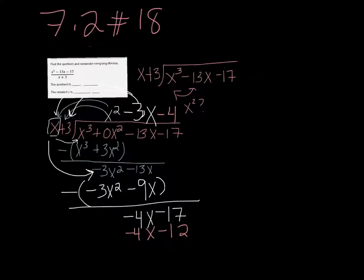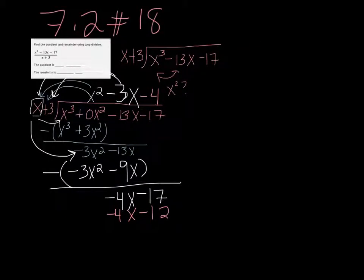And for the last time, we're going to subtract that. So negative 17 minus a negative 12 would be negative 17 plus 12. So that's going to be negative 5.